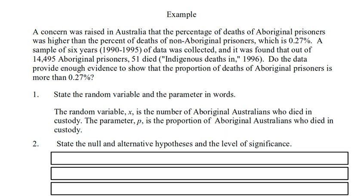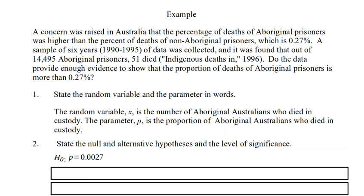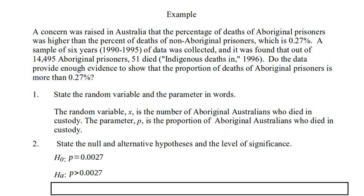State the null and alternative hypotheses and the level of significance. The null hypothesis is that proportion among Aboriginal Australians is the same as the proportion for everyone else, 0.27%. The alternative hypothesis, the hypothesis that we're trying to demonstrate, if you look at that proportion, it's a lot more than 0.27%. So our alternative hypothesis is that the true population proportion among Aboriginal prisoners is greater than 0.27%. Those who died. The level of significance here, 5%.